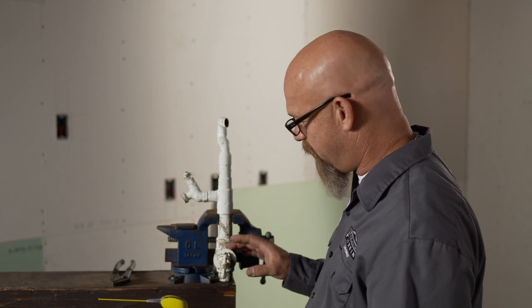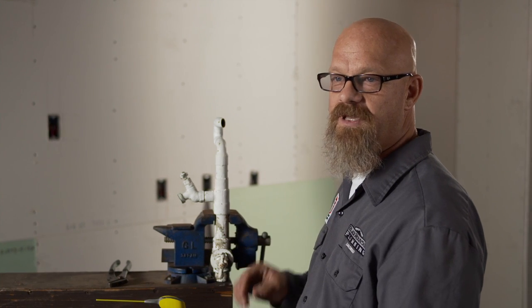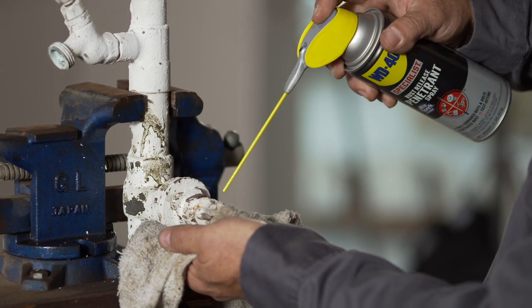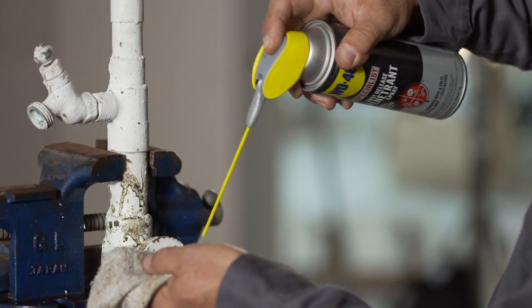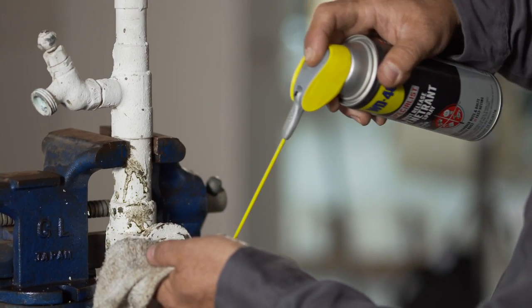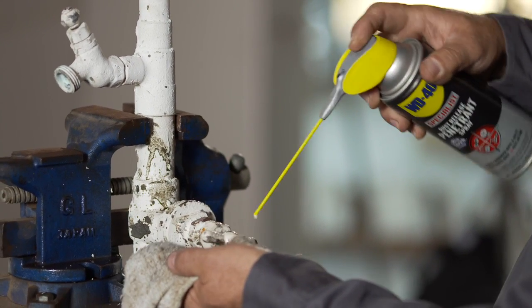At Black Mountain Plumbing, when we have something like this, an old valve that we need to disassemble, we can use the WD-40 Specialist rust release penetrant. You can go ahead and just put it on the valve, get it into all the nooks and crannies, around the bonnet, around the packing nut, around the handle, any of the stuff you want to take apart.